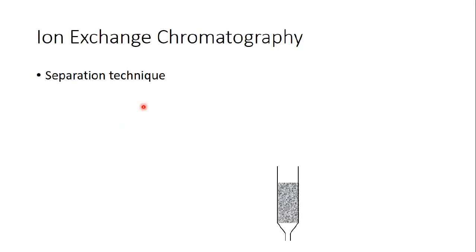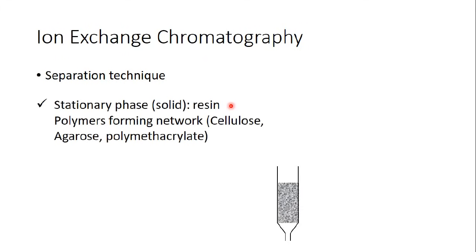We use it to separate proteins or other types of molecules from each other. When we speak about chromatography, we should always mention the stationary phase and the mobile phase. In ion exchange chromatography, the stationary phase is a resin — it is solid, a resin-forming polymer or network. It can be cellulose or agarose or any type of resin.